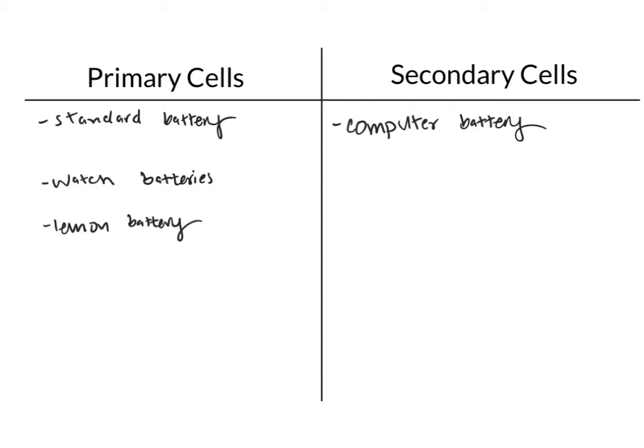You can see here, a secondary cell is really useful for products that you want to last a long time and that use a lot of power. So really, any portable electronics will have a secondary cell for their battery.